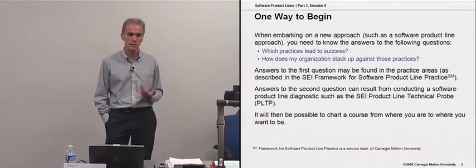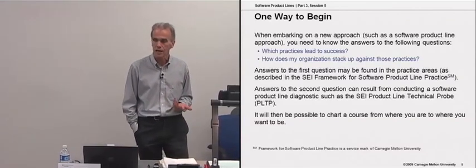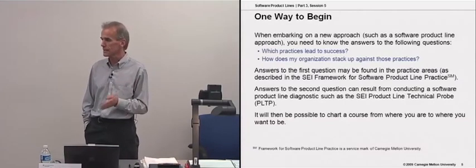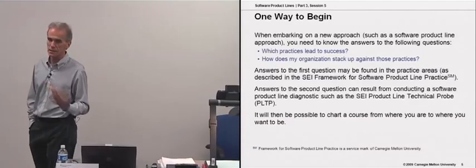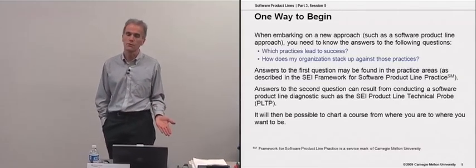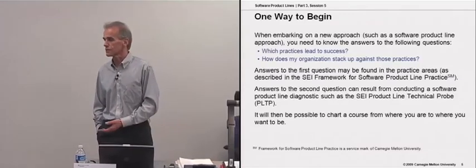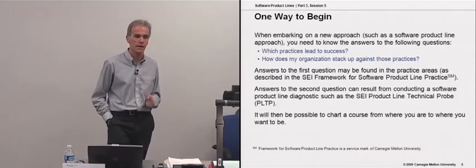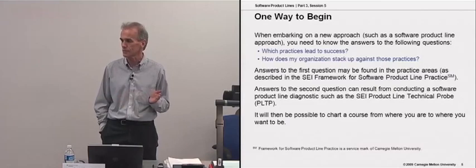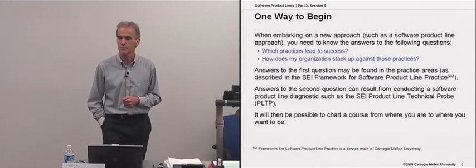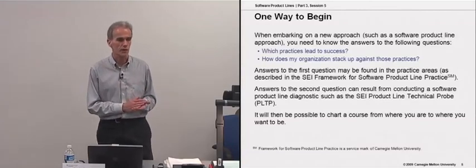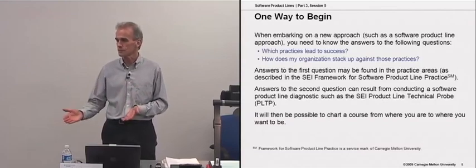There is guidance in the form of the 29 practice areas of the framework. How does my organization and my current situation rate against those practice areas? What is my state of practice with respect to architecture evaluation, for example? And is that good enough for evaluating a product line architecture? You can make a determination of where you are now by conducting an assessment of all the parts of the organization that are likely to be part of the product line effort.